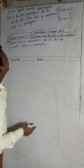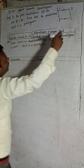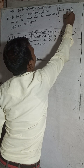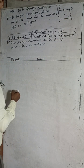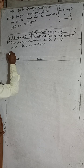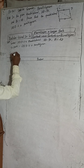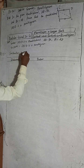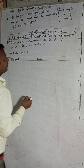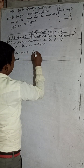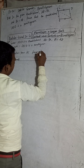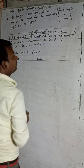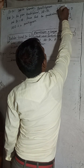To solve this, we draw diagonal AC. Construction: draw diagonal AC. This construction makes it easy to solve the problem, so we draw it clearly.